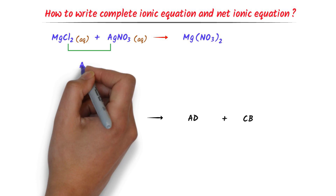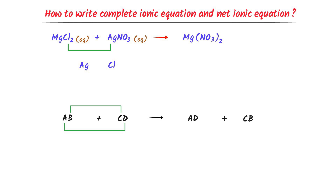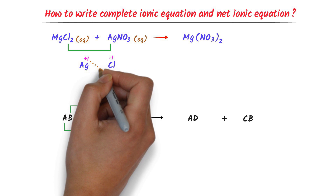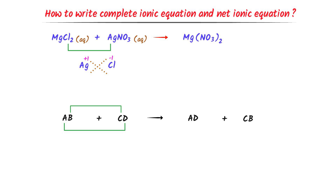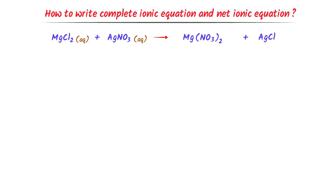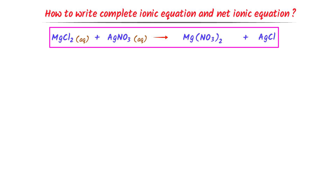Secondly, silver will combine with chlorine. The net charge on silver is positive 1 and the net charge on chlorine is negative 1. We cross their respective charges and get silver chloride, AgCl. So we have correctly predicted the second product. Thus, aqueous magnesium chloride reacts with aqueous silver nitrate to form magnesium nitrate and silver chloride.